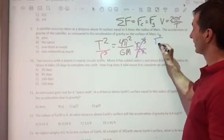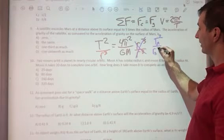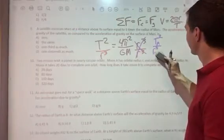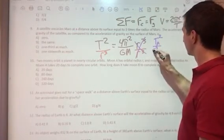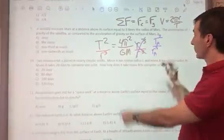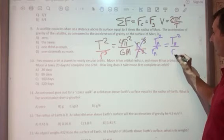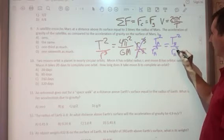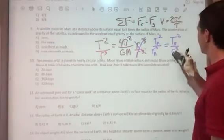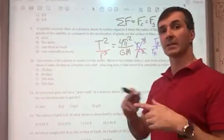I could say T² of moon A over R³ of moon A equals that, and the period of B squared over the orbital radius of B cubed is also equal to that. If A equals B and B equals C, then A equals C.